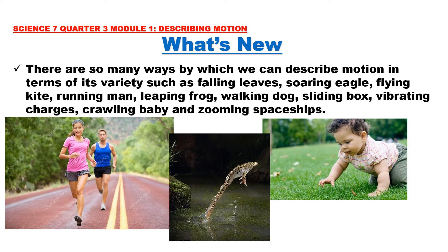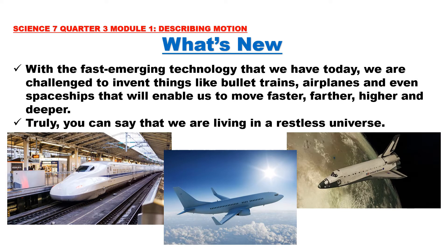There are so many ways by which we can describe motion in terms of its variety — such as falling leaves, soaring eagle, flying kite, a running man, a living frog, walking dog, sliding box, vibrating charges, a crawling baby, and swimming. All of these are examples of motion. With fast emerging technology today, we are challenged to invent things like bullet trains, airplanes, and even spaceships that will enable us to move faster, farther, higher, and deeper. Truly, we are living in a restless universe.